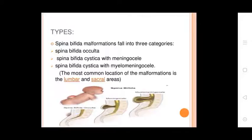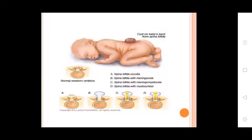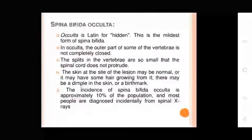The most common location of the malformation is the lumbar and sacral areas. Spina Bifida Occulta: In this form, the splits in the vertebrae are so small that the spinal cord does not protrude.